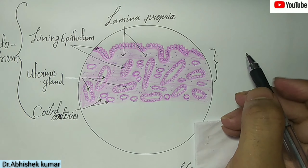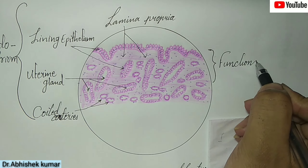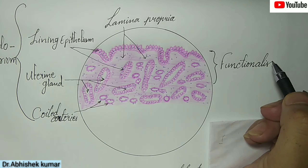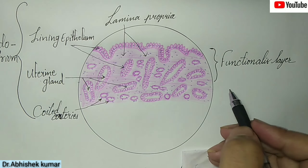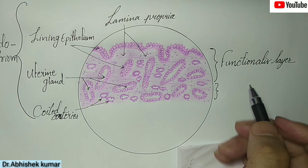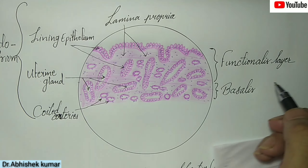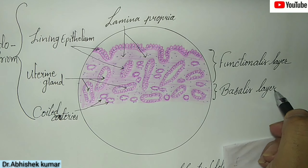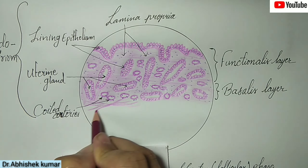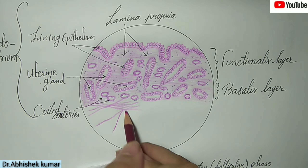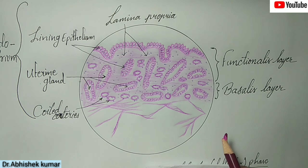This is the functionalis layer, and here is the basalis layer — these are the two layers of the endometrium: functionalis and basalis.